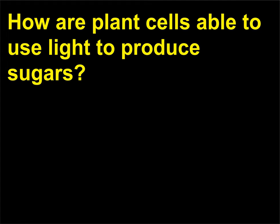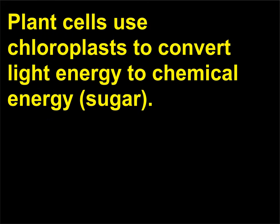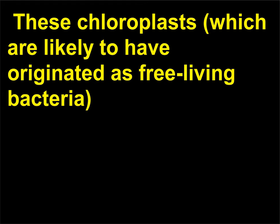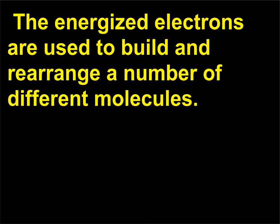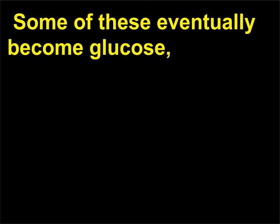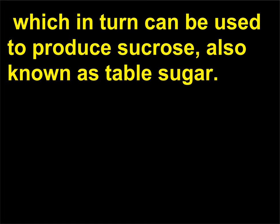How are plant cells able to use light to produce sugars? Plant cells use chloroplasts to convert light energy to chemical energy, sugar. These chloroplasts, which are likely to have originated as free-living bacteria, use the energy contained in UV radiation to raise electrons to higher energy states through the process of photosynthesis. The energized electrons are used to build and rearrange a number of different molecules. Some of these eventually become glucose, while others are used to produce sucrose, also known as table sugar.